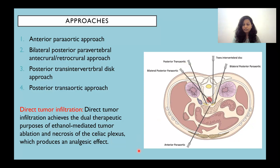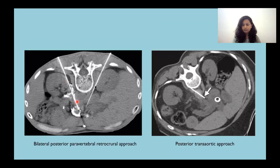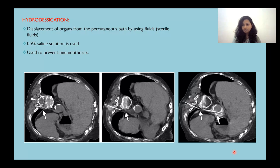Direct tumor infiltration involves a dual therapeutic purpose of ethanol-mediated tumor ablation and necrosis of the celiac plexus, which ultimately produces the analgesic effect. This CT image depicts the bilateral posterior paravertebral retrocrural approach, and this image depicts the posterior trans-aortic approach. Hydrodissection is performed using 0.9% saline solution, wherein organs are displaced from the percutaneous path using sterile fluids, and it is used to prevent pneumothorax.